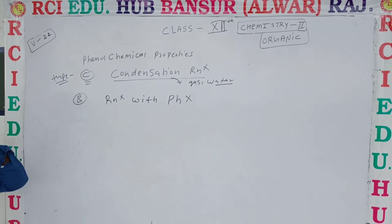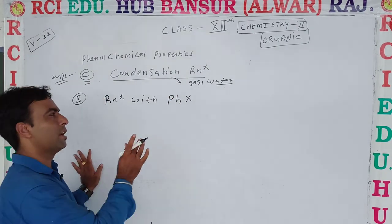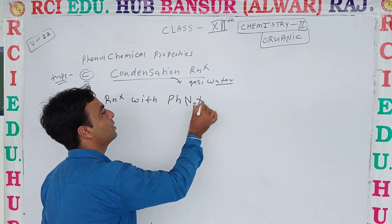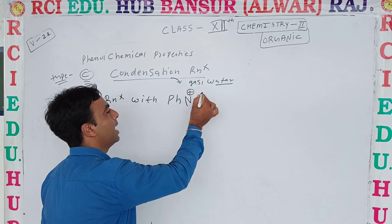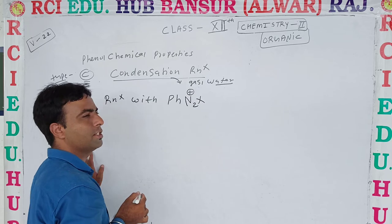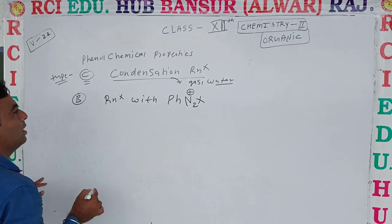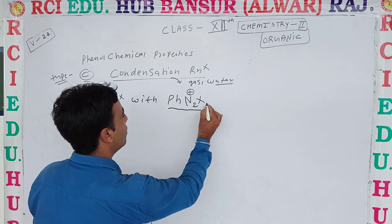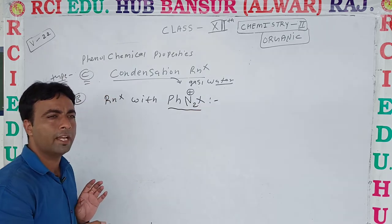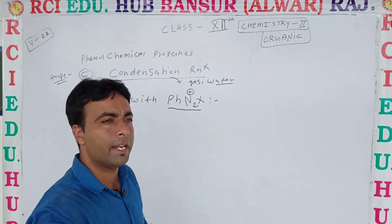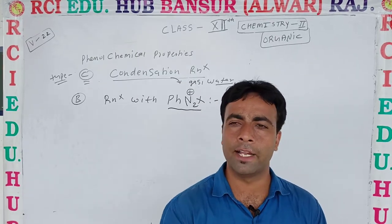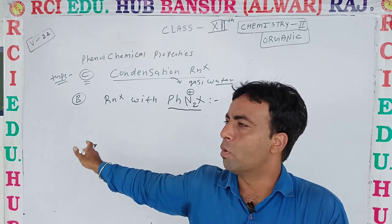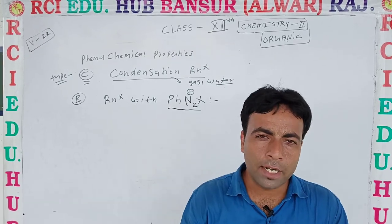Diazonium salt — we are going to carry out a reaction with diazonium salt. This is a very important reaction. All the dyes that exist — their formation happens through this reaction. This is a very important reaction for the dye industry. In the dye industry, this reaction is very important. Its application part is important.